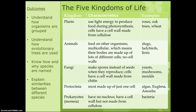Fungi make spores instead of seeds, and their cells have a cell wall made of chitin — something different to plants, which are made of cellulose. Examples of fungi are mushrooms, probably the easy one to remember, and moulds.